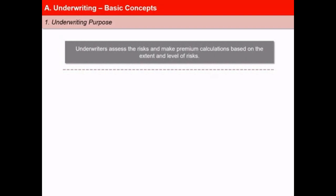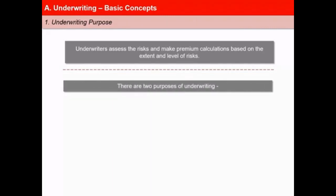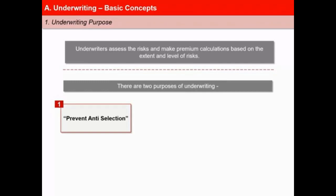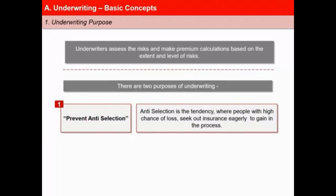Underwriters assess the risks and make premium calculations based on the extent and level of risks. The purpose of underwriting is two-fold. First is to prevent anti-selection or selection against the insurer. The term selection of risks refers to the process of evaluating each proposal for life insurance in terms of the degree of risk it represents and then deciding on granting the insurance and its terms. Anti-selection is the tendency of people to seek out insurance eagerly to gain in the process because they suspect that their chance of experiencing a loss is high.